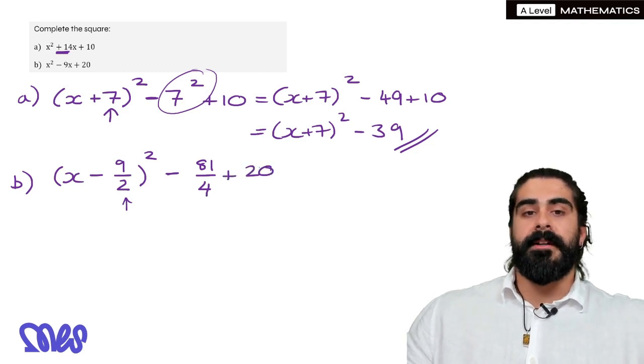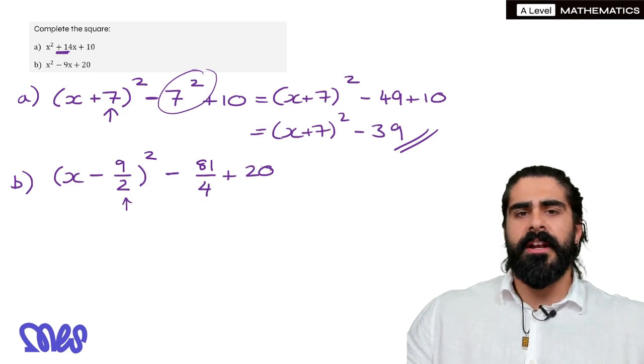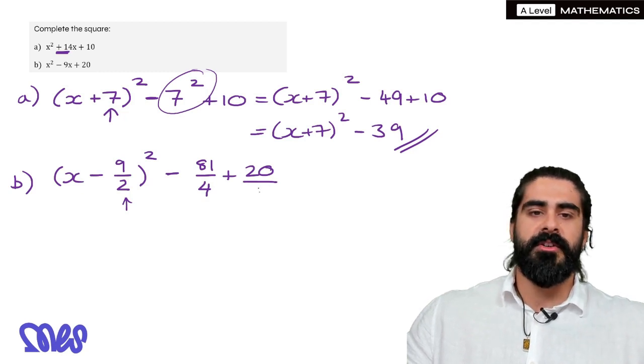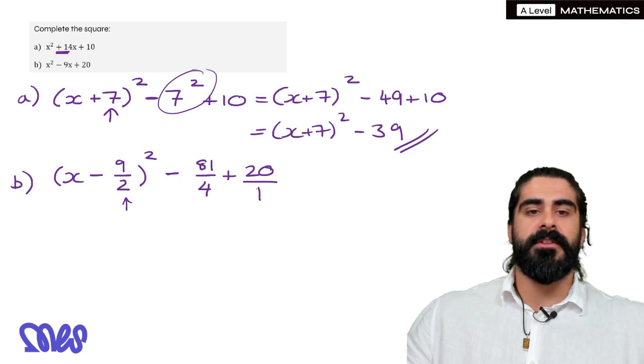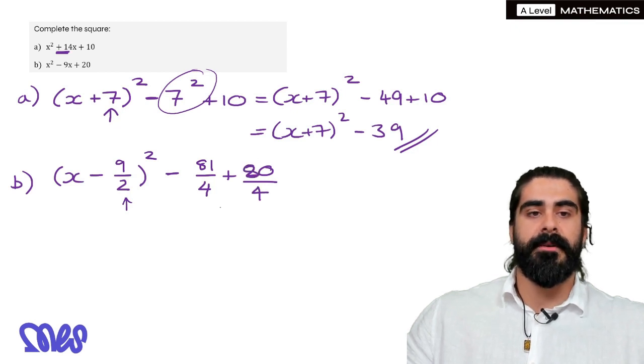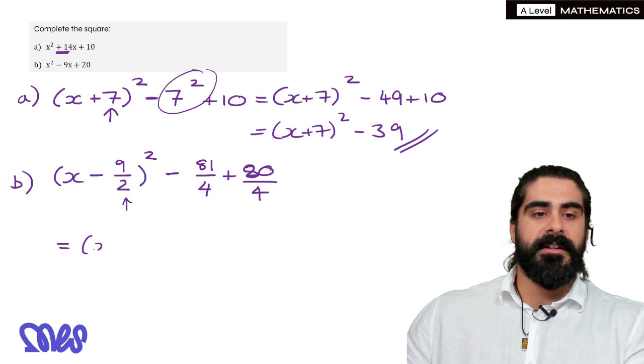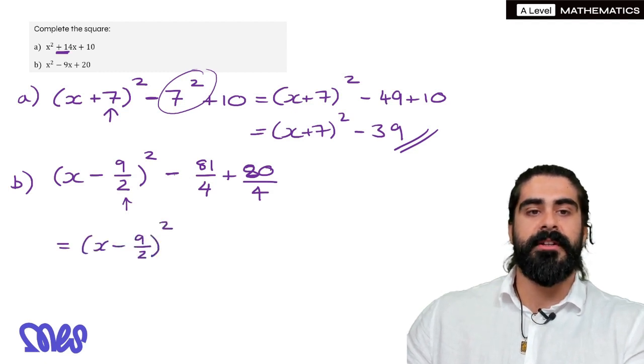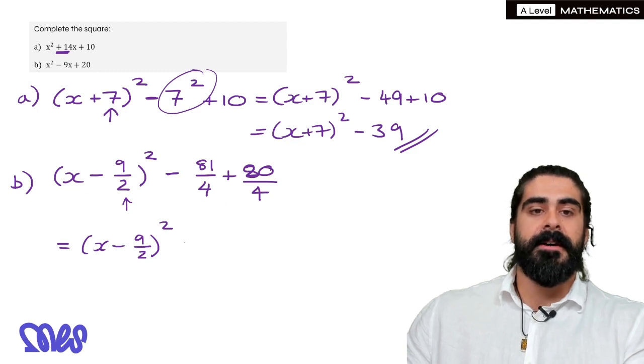Now we just want to combine. Now you can use your calculator for this, but 20 we can write as 20 over 1. Then to combine the fractions, we need both denominators to be over 4, so 20 over 1 we can times top and bottom by 4, so we'd have 4 down here and 80 on the top. And so our final answer is x minus 9 over 2 squared. Then we read the numerator, so minus 81 plus 80 is minus 1 over 4.